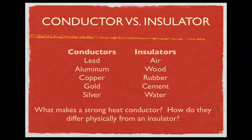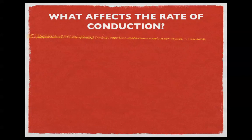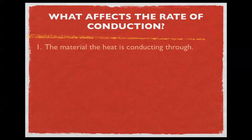Air and water are actually free-moving, which makes it even more difficult to conduct heat — the key word being conduct. Now, what affects the rate of conduction? The first thing is the material that heat is conducting through. If something is made out of metal, it's more often than not a better conductor than something more organic like wood, plant material, or rubber. The first factor has to do with how organized and how dense the material is that you're traveling through.